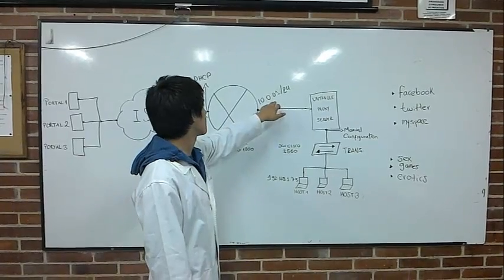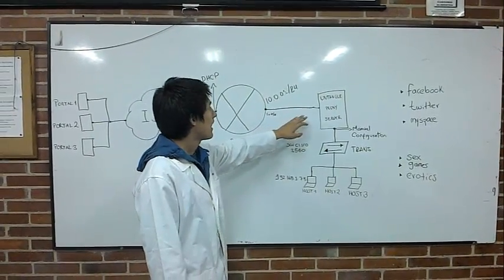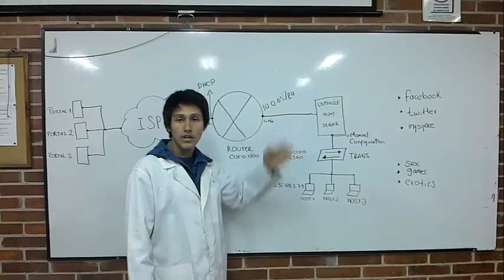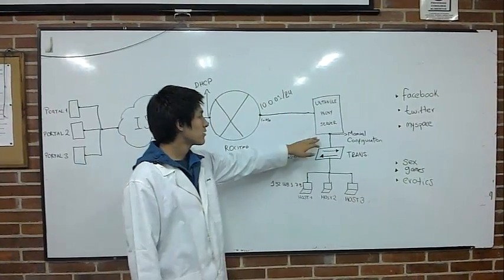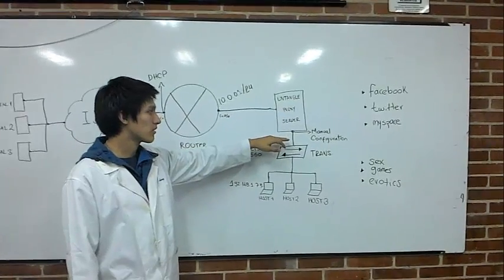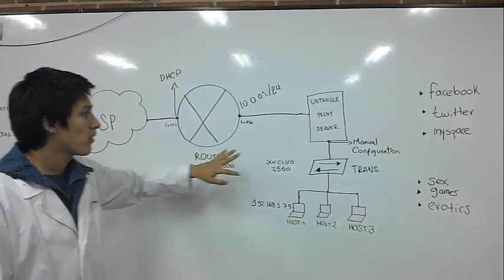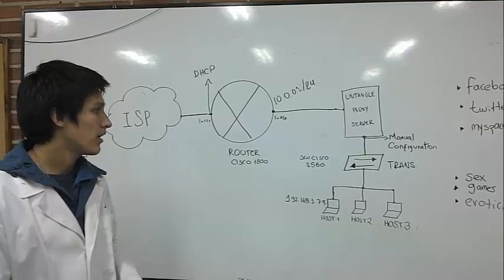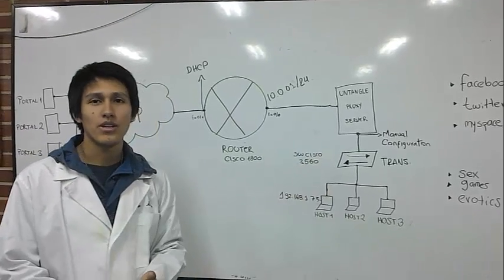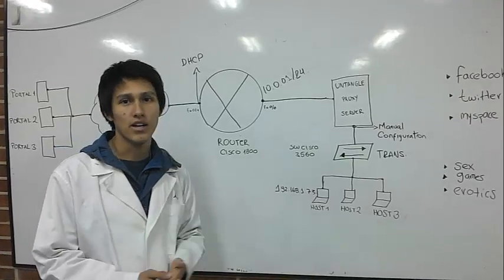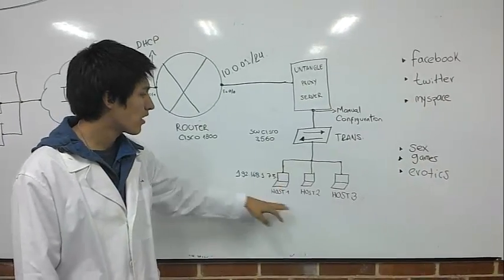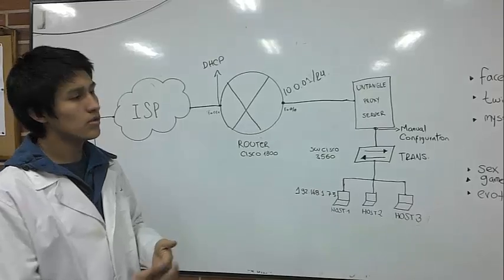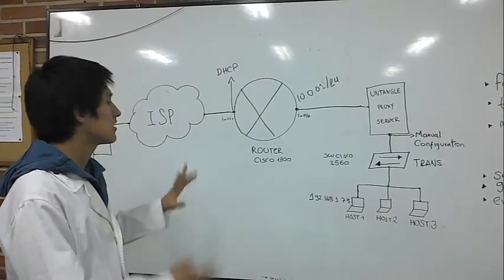This is the address for this interface, and next we configure the Untangle proxy server. We configure it manually — this is the manual configuration about the address and the connection with the switch. We use a transparent switch because we don't need to configure it. After, we configure the address with the hosts. In this case we have two hosts, but we can add more. This is our topology.